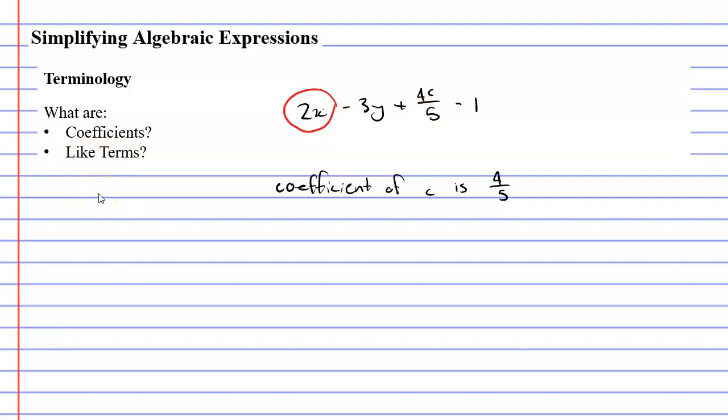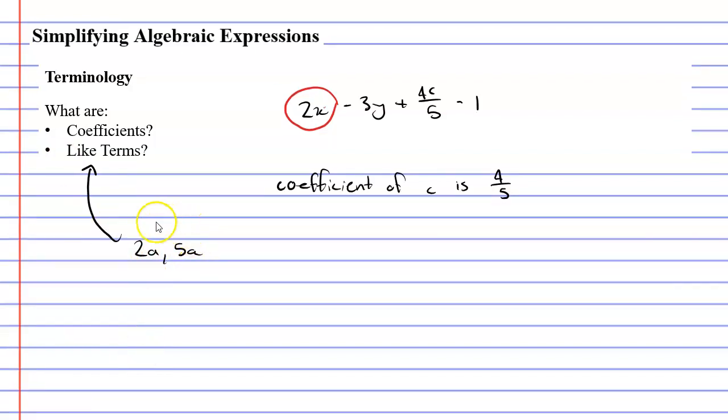I also want to define like terms. What are like terms? Well, like terms are basically terms that have the same set of pronumerals. So something such as 2a and 5a, these are two like terms. We can say they are like terms because they both have the same pronumeral of a. They have different coefficients of 5 and 2, but that doesn't matter. What's important here for them to be like terms is that the pronumerals are the same.